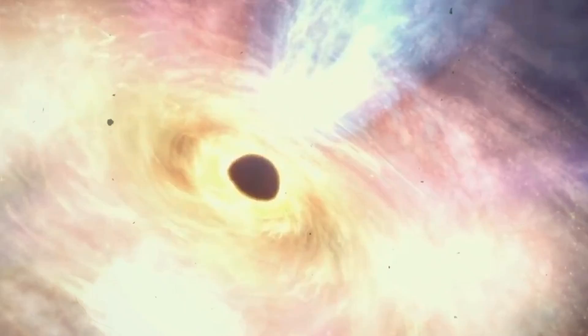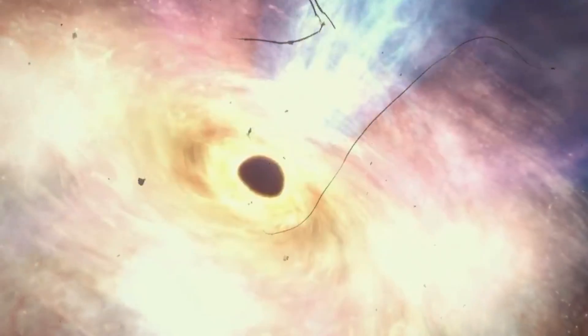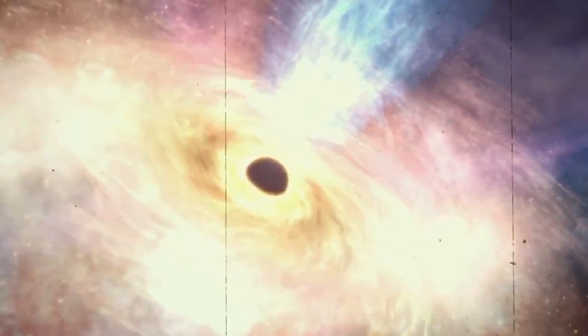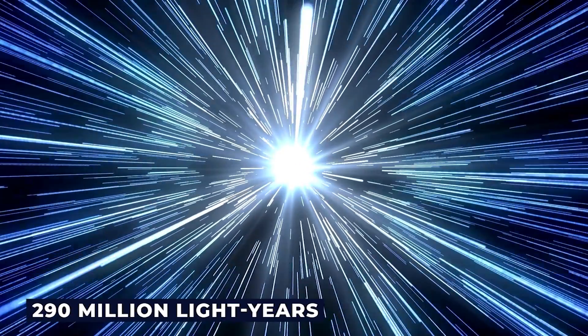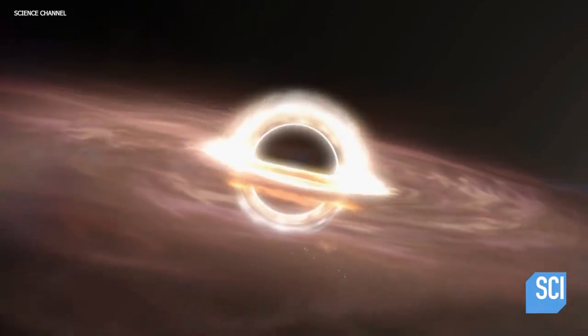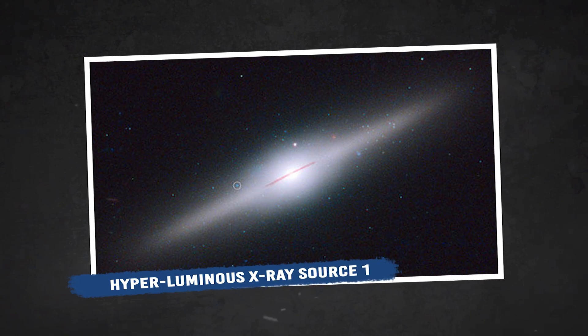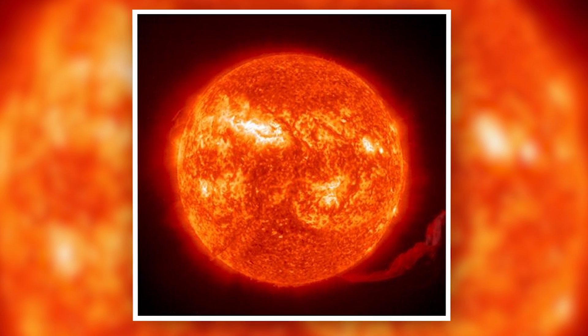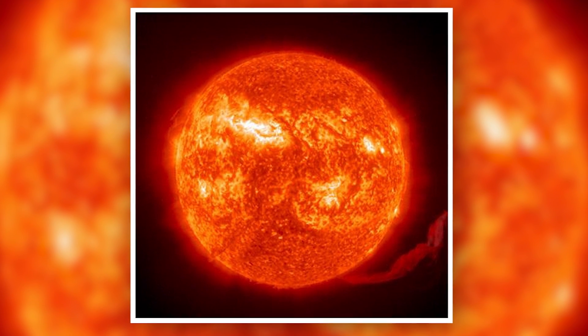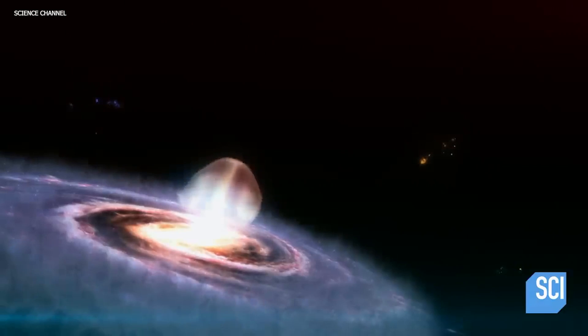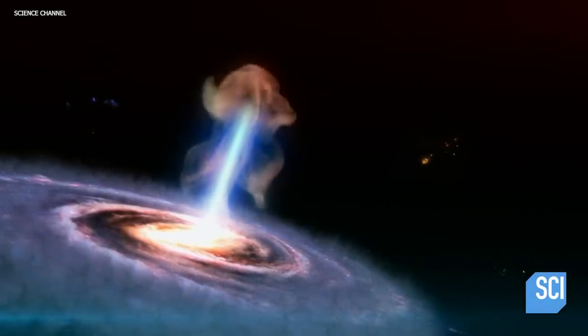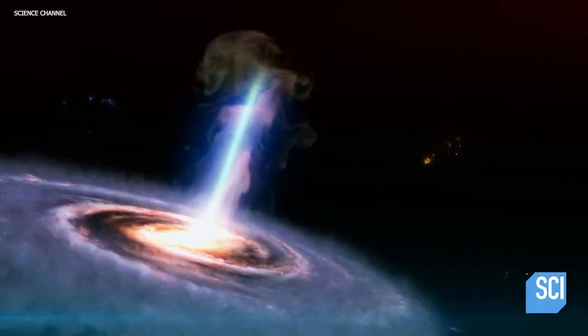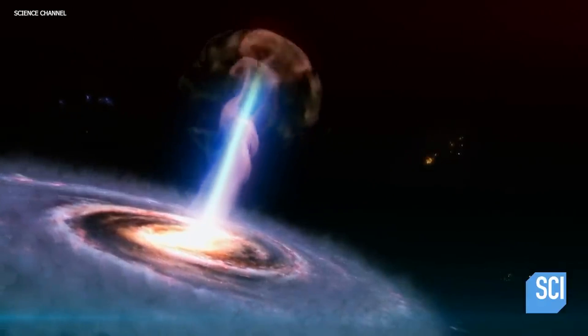But until 2009, scientists couldn't seem to pin down what exactly middleweight black holes were. About 290 million light years from Earth, scientists found the first intermediate mass black hole, dubbed HLX1 or Hyperluminous X-ray Source 1. Size estimates put the strange object at around 20,000 solar masses. Knowing more about these intermediate black holes can help us better comprehend the evolution of both supermassive black holes and the galaxies that host them.